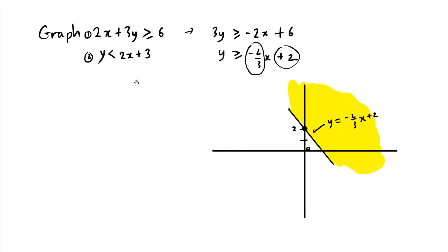Let's try another line now. Y is less than 2x plus 3. Fortunately, this y is already isolated, so I know this is my slope and this is my y-intercept.